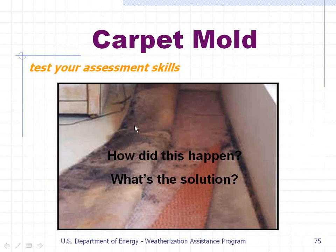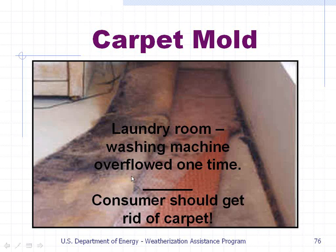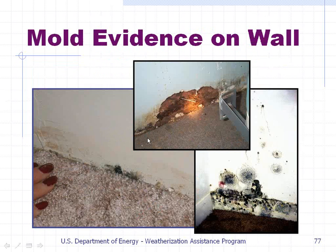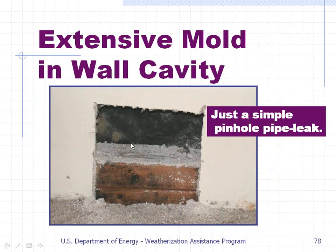Carpet mold — test your assessment skills. See the mold on these sections of carpet, the dark places right here. How did this happen? In the laundry room, a washing machine overflowed one time, got the carpet wet, and allowed mold to grow. The only practical solution is for the consumer to get rid of the carpet. Mold evidence on walls — down at a floor joint, mold is growing, a pretty bad situation. And extensive mold in a wall cavity was caused by just a simple pinhole pipe leak in one of the water pipes, which got the area wet and allowed mold to grow. Just little things like that can allow mold to grow.